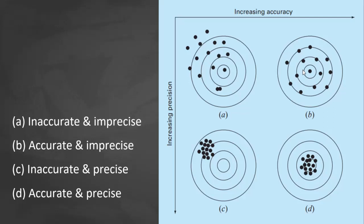B is accurate because the shots are centered on the bull's eye, but it's imprecise because it's scattered. So accurate yet imprecise.